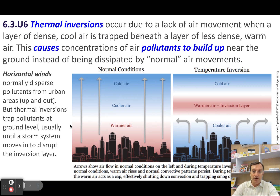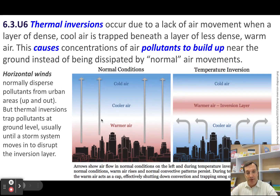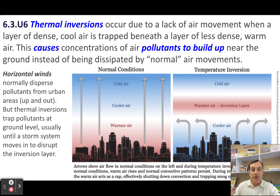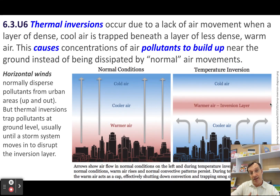A thermal inversion — an inversion means something is backwards or flipped. Typically, warm air rises through the atmosphere and is then replaced by cooler air. You get horizontal winds that come in from the side to replace that warm air as it rises. What happens with a thermal inversion is that because you have mountains on either side of a city, or a city is in a valley surrounded by higher landscape around it...